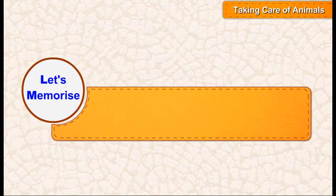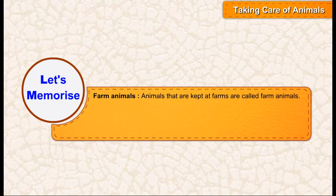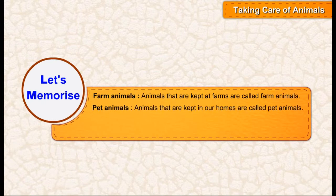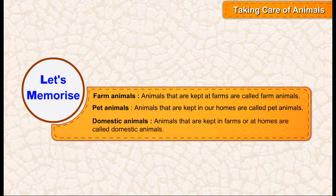Let's memorize. Farm animals — animals that are kept at farms are called farm animals. Pet animals — animals that are kept in our homes are called pet animals. Domestic animals — animals that are kept in farms or at homes are called domestic animals.